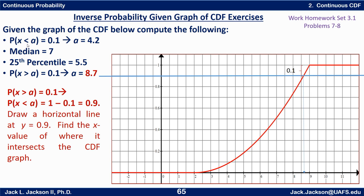To summarize: when the cumulative probability — probability to the left — is given, find a directly. When probability to the right is given, do 1-minus first. Medians and percentiles give you a probability to the left. These are all inverse probability problems: find the appropriate y value, draw a horizontal line, find where it crosses the CDF graph, pull down, and read off x. In the next video, we'll do this same thing but starting with a formula and using a graphing calculator to solve for x or y values.